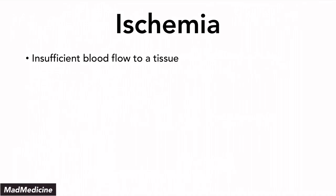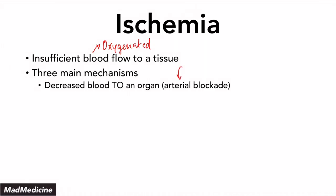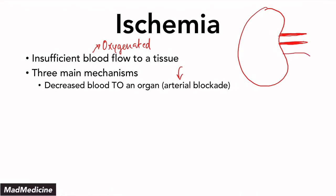Ischemia is essentially insufficient blood flowing to an organ or tissue — specifically, not enough oxygenated blood going to a tissue. There are three main mechanisms of ischemia. The first is decreased blood going to an organ, which is an arterial blockade. For example, using a kidney diagram: if the renal artery is blocked, you do not have enough blood going to the organ, and that's going to lead to ischemia and then necrosis — tissue damage due to insufficient blood flow.